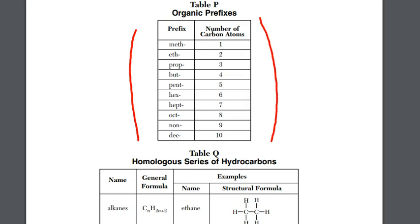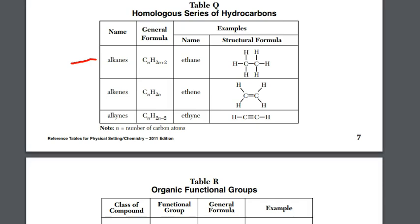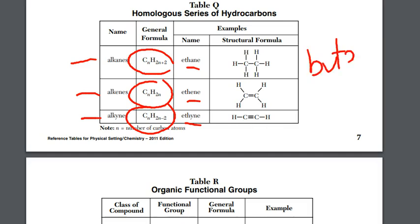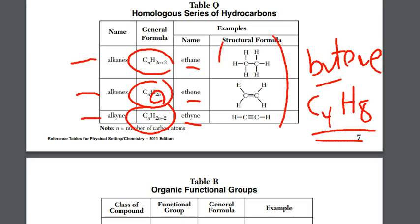For reference table Q, not only do you have the name of each, the ending here, the A-N-E, the E-N-E, and the Y-N-E, tell me whether I have all single bonds between carbons, one double bond, or one triple bond. And the general formula would be if I'm asked, for example, let's say, what is the formula for butene? I use the 4 right from the prefix from reference table P. So it's going to be C4, and then as far as the number of H's, that's where the 2N would come in. 2 times 4 is 8.